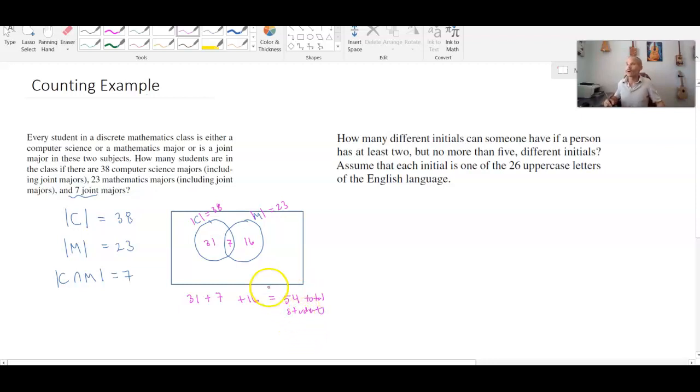Now we could have also done that to say what we're really asking for is how many students are in the class. Well the universe in this case is consisting only of the computer science majors and the math majors. This is going to be the union of M and C, so I can write M union C.